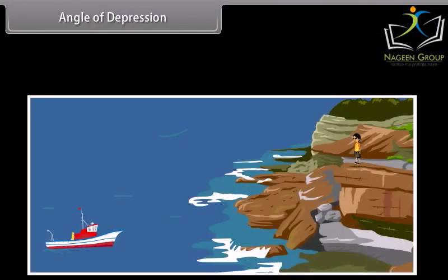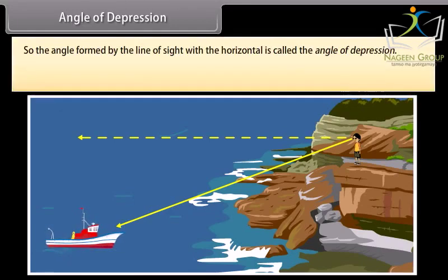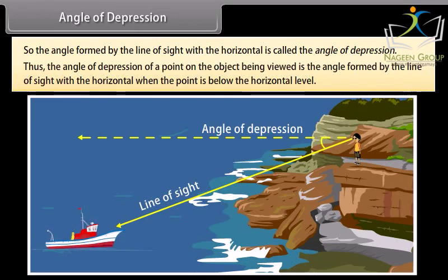Angle of depression: Now consider the situation when a boy is standing at the cliff and is looking down at the boat. Here the line of sight is below the horizontal level. So, the angle formed by the line of sight with the horizontal is called the angle of depression. Thus, the angle of depression of a point on the object being viewed is the angle formed by the line of sight with the horizontal when the point is below the horizontal level.